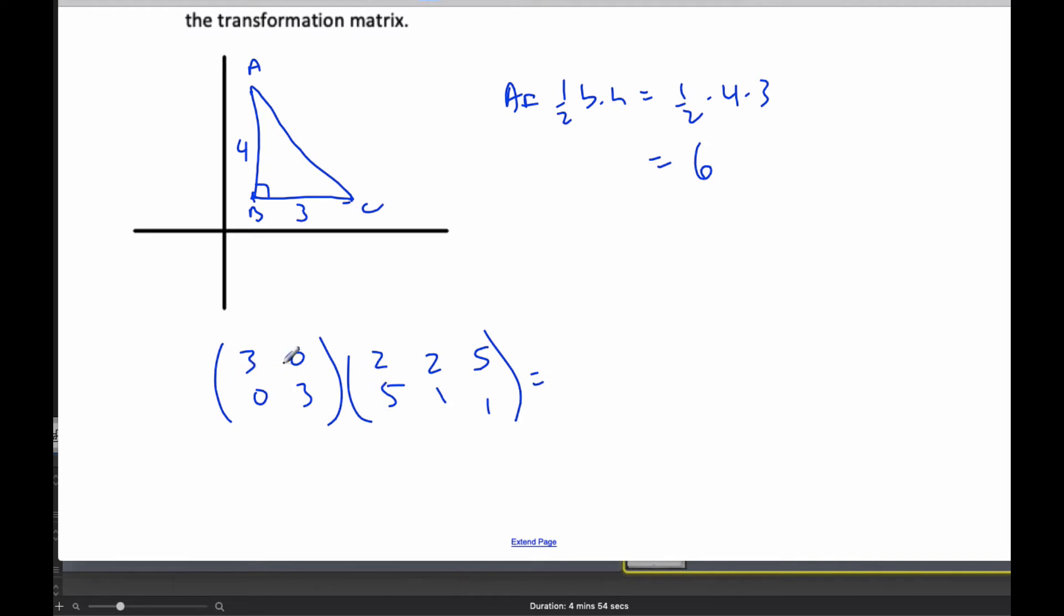3 times 2, 0 times 5, and so on, I end up with 6, 6, 15, and 15, 3, 3 as my new points.